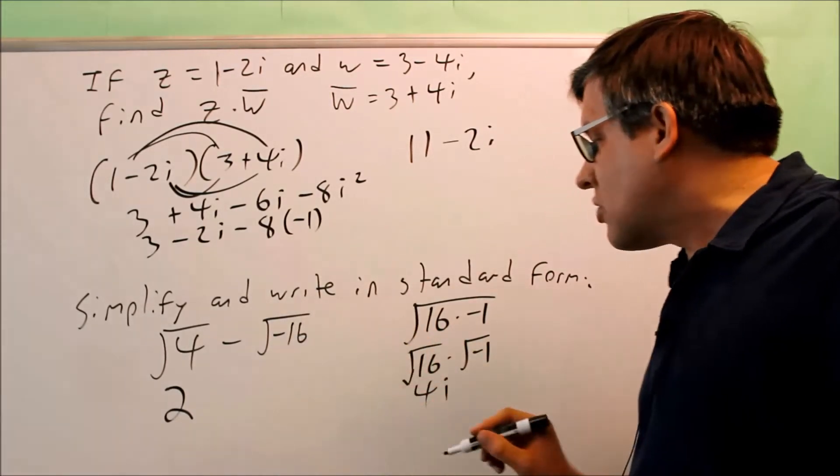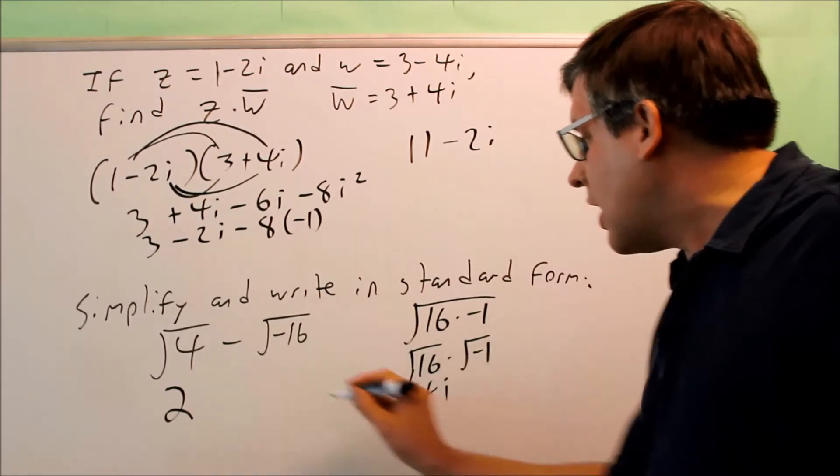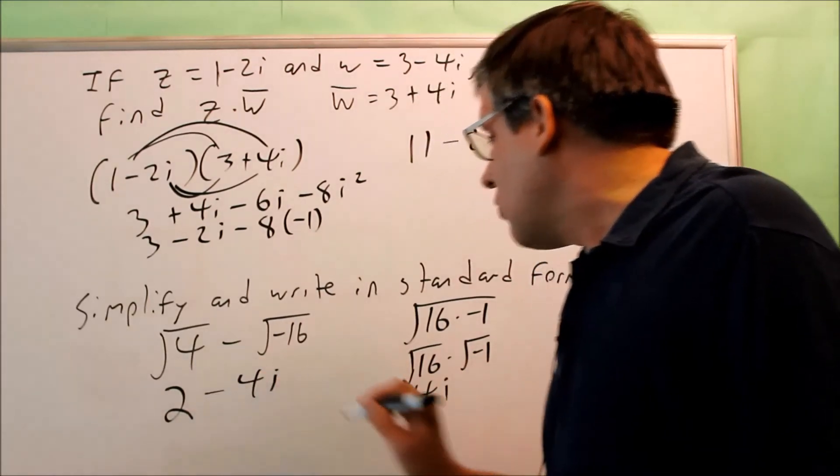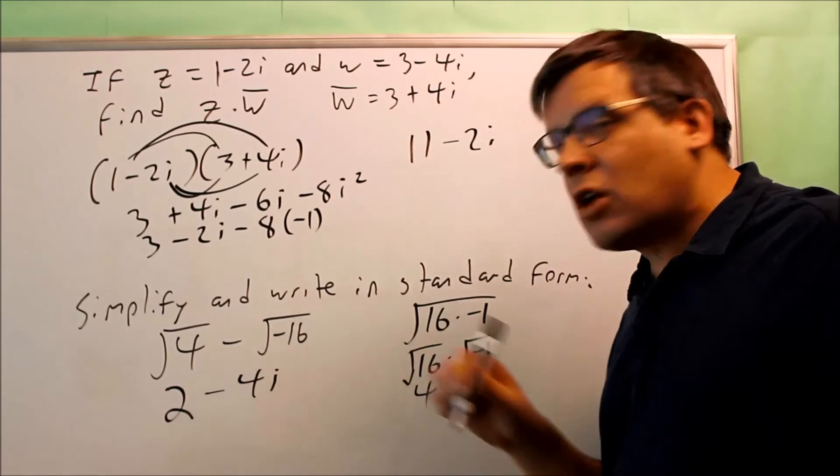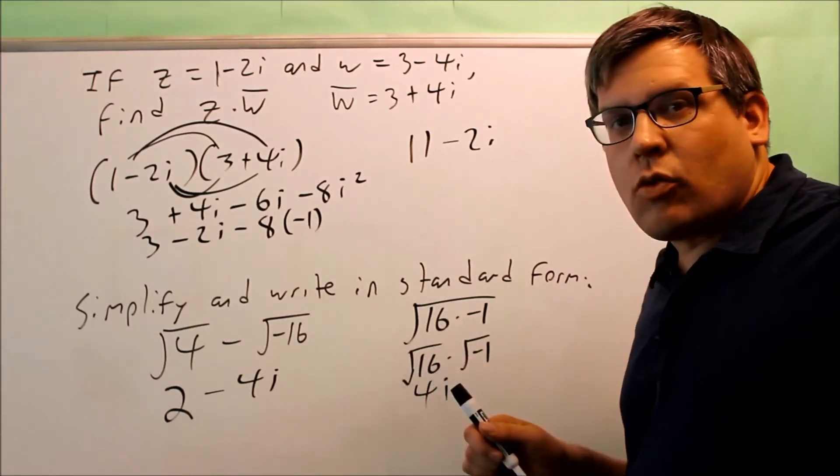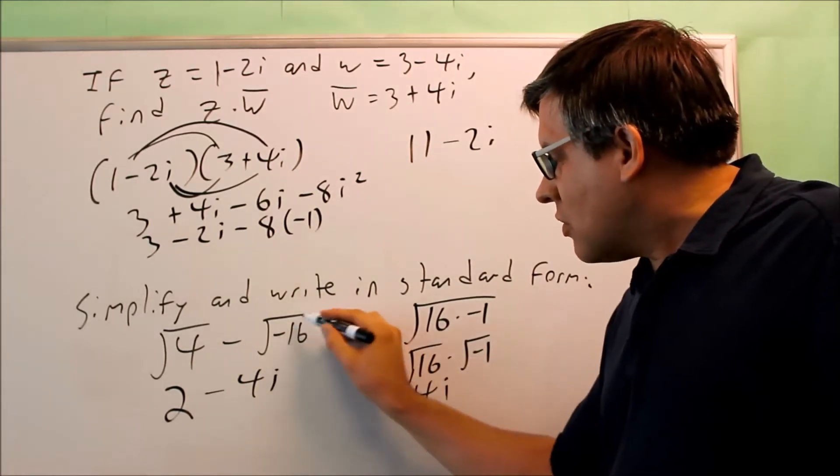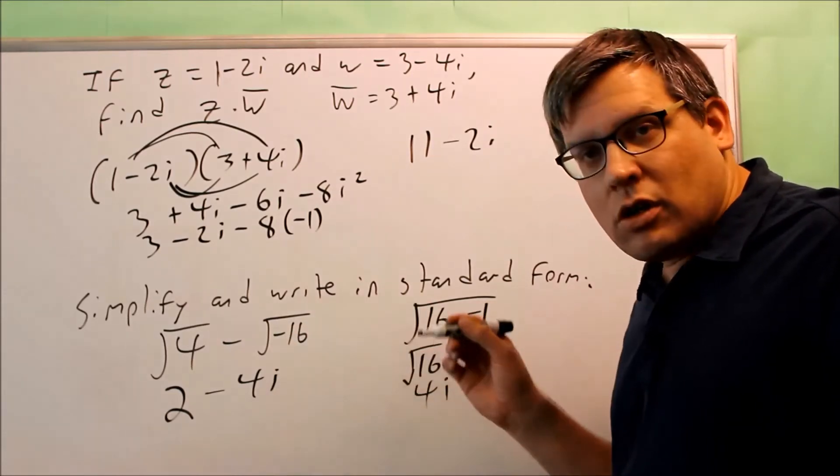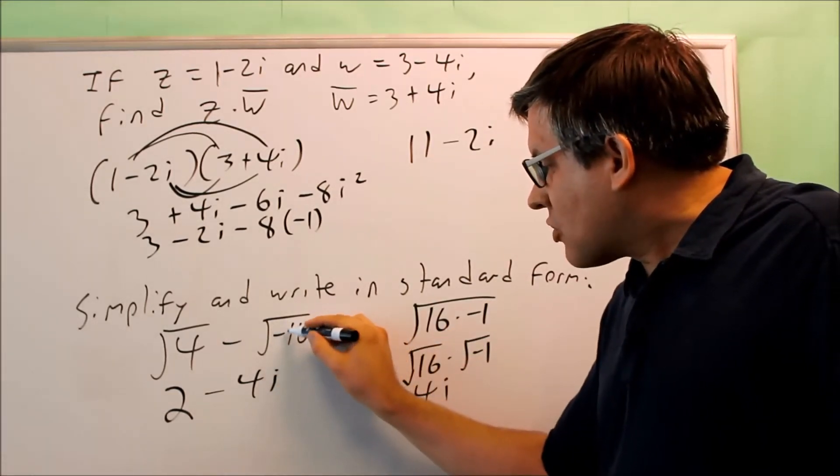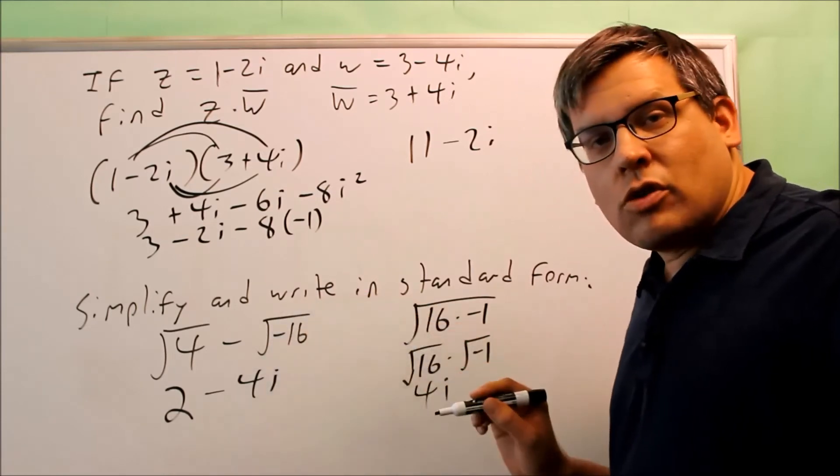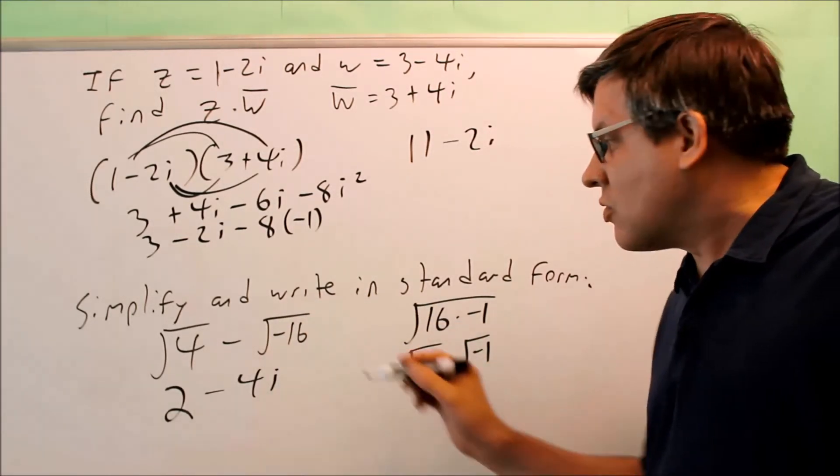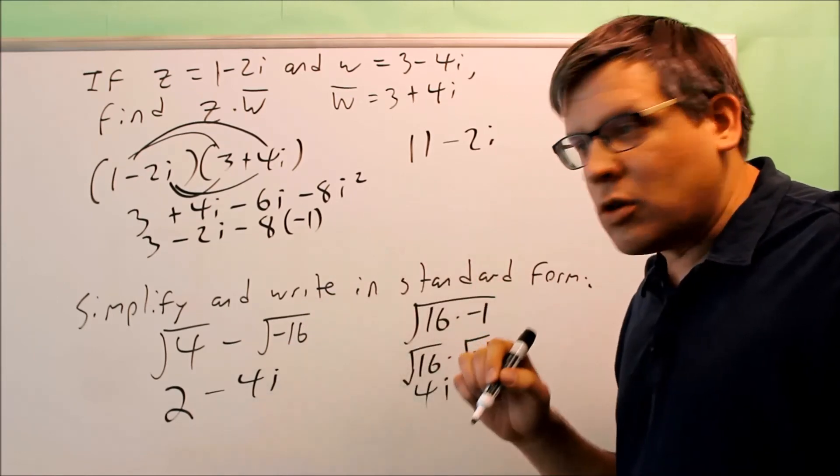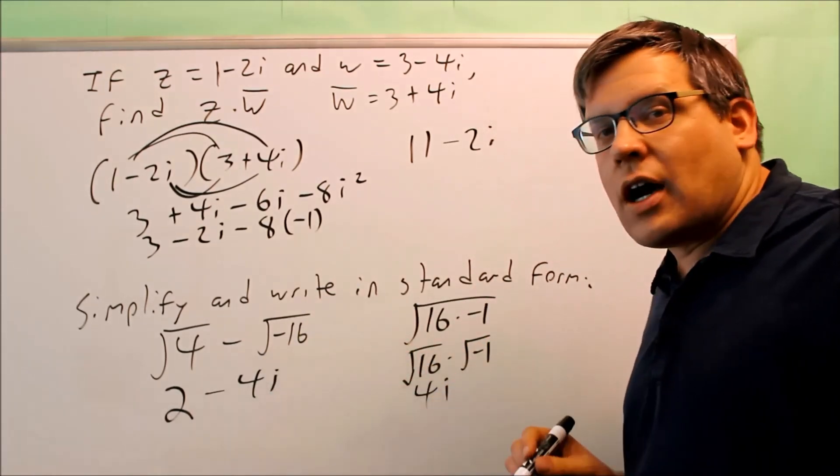So the square root of negative 16 is going to turn into 4i. So therefore, this would be the proper standard form, 2 minus 4i. So the shortcut way of doing that is you just ignore the minus sign. And so I know square root of 16 is going to give me a 4. But then, because I got a negative sign underneath the square root, that tells me that I'm going to have an extra i for my answer. So anytime you have a square root of a negative number, we're going to turn it into an i.